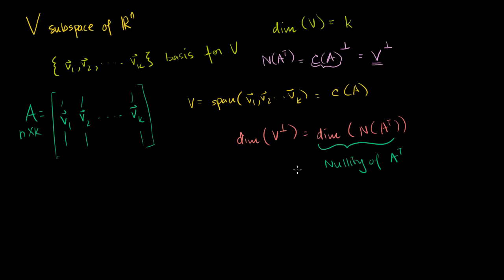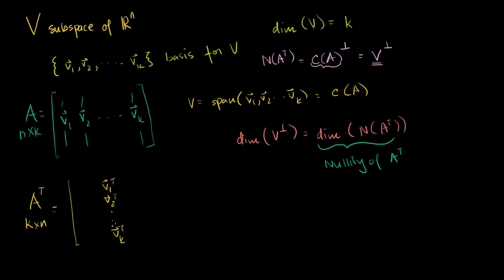Let's take A transpose. It's going to be a k by n matrix. The columns of A turn into rows, so A transpose has rows v1 transpose, v2 transpose, all the way down to vk transpose — these are all row vectors.